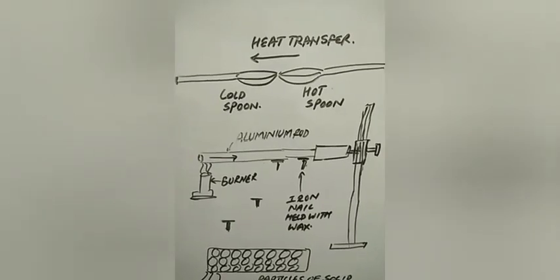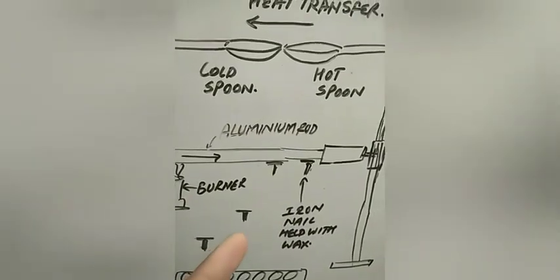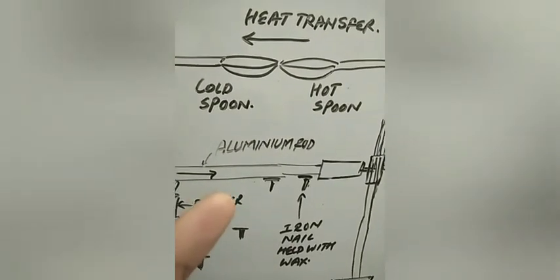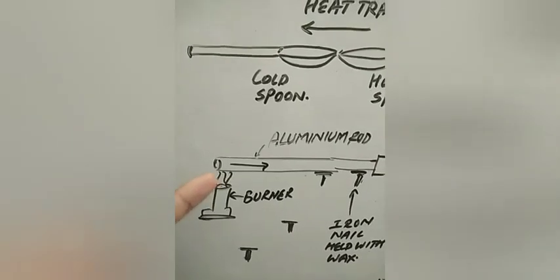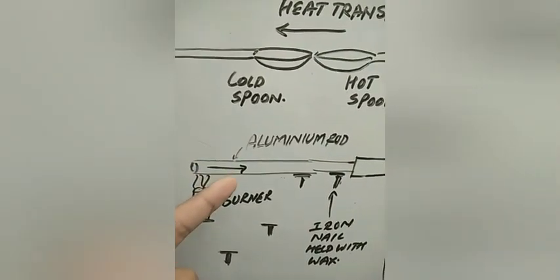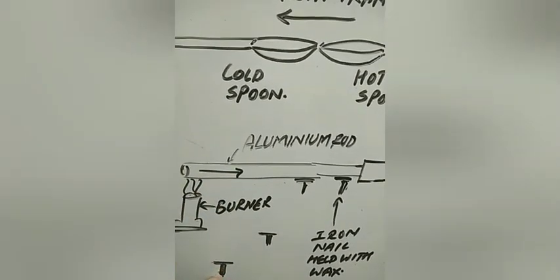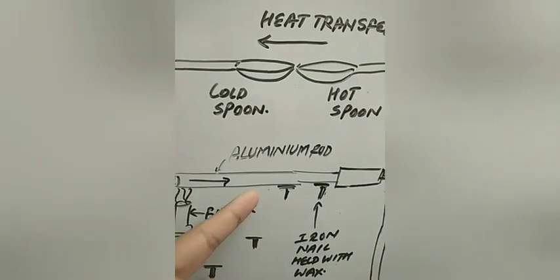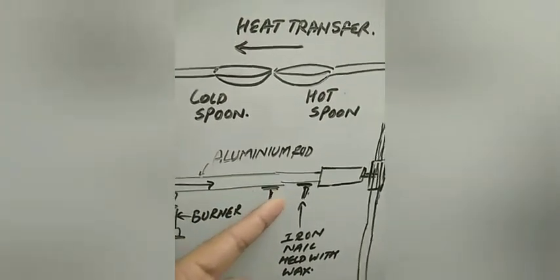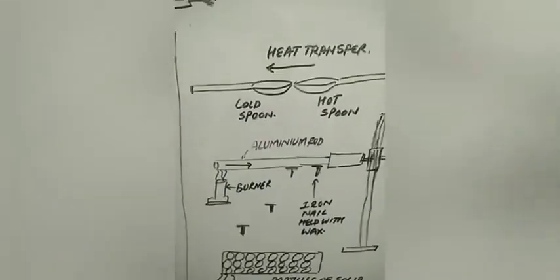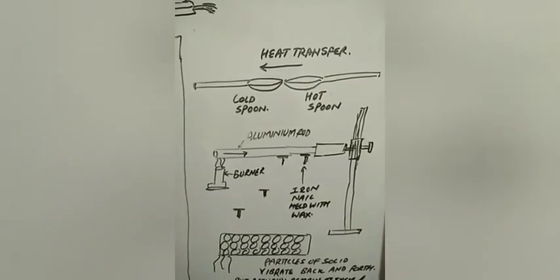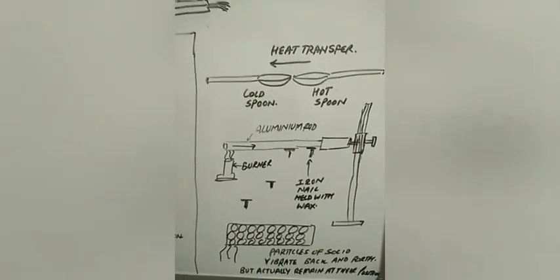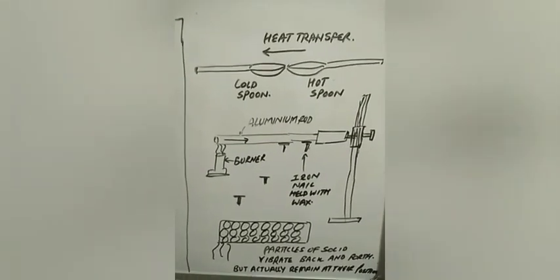In a demonstration, an aluminum rod is fixed on a stand in a T-shape with iron nails attached using wax. As the burner heats the rod, atoms transfer heat forward — the wax nearest to the burner melts first, the nail drops, then the next wax melts and that nail falls, and so on. This shows that heat transfers gradually from one end to the other through conduction, with particles vibrating but not actually moving from their position.